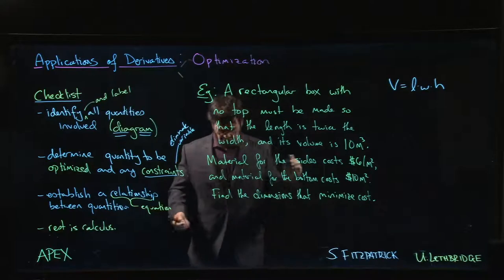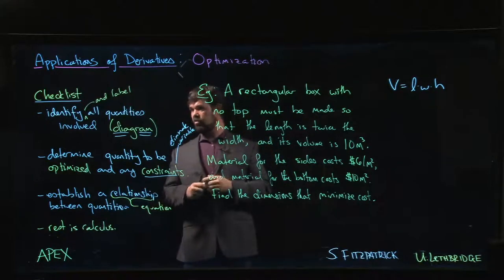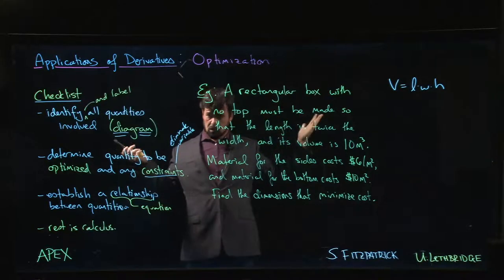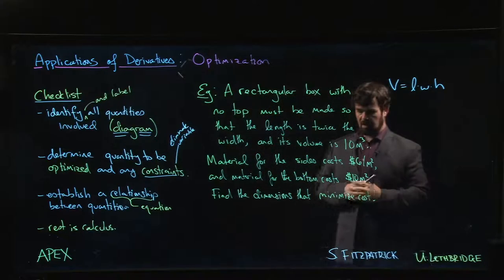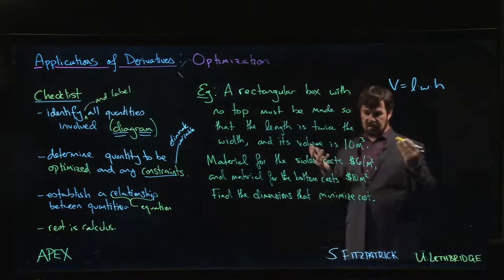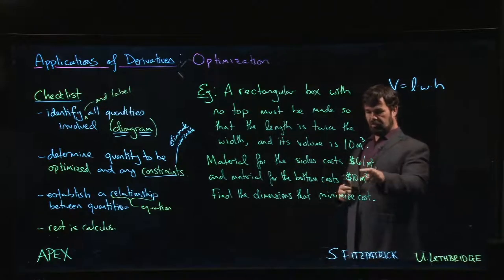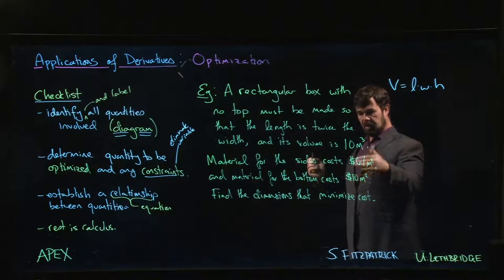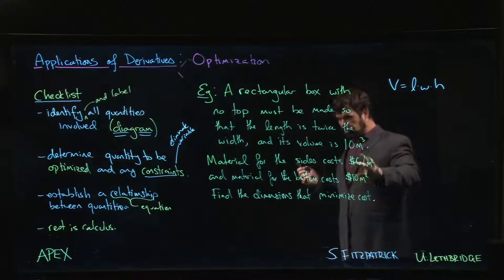So when you want to set these up, you go through your checklist. You've got to identify quantities involved—well, length, width, and height, sure. But we throw a little bit of a twist on this one. We're not just trying to minimize the area. We switch things up so that there are weights involved. We're trying to minimize not area but cost, and the cost per area depends on whether you're building the sides or the bottom. So this is going to throw things off.